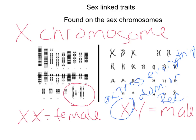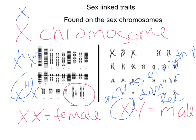Females express things just like we would normally. If a female is heterozygous, she would express the dominant allele. Females could be homozygous recessive, or homozygous dominant. Females do not necessarily express everything because they have two copies of the X chromosome.